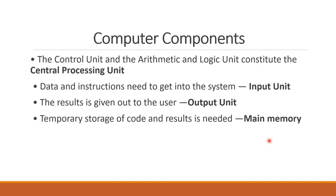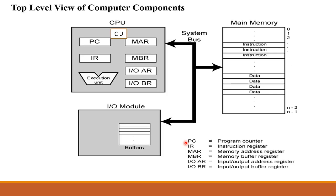So we have: input unit, output unit, and main memory. And the communication unit — interconnection structures and buses, also called the system bus. Now we will look at a picture. This is the top-level view of computer components. The top-level view shows only the basic components, while this other diagram is the detailed or deep-level view — the structure of computer components.